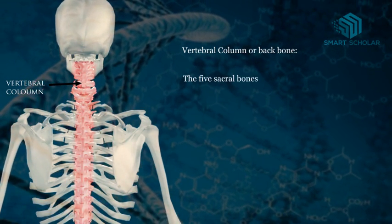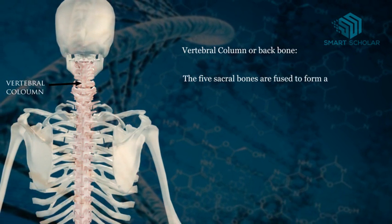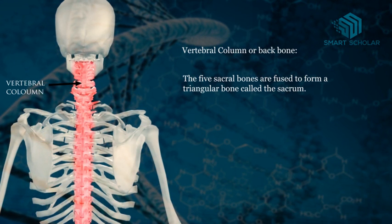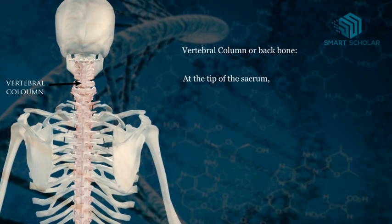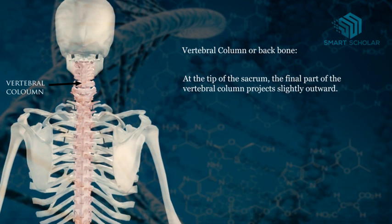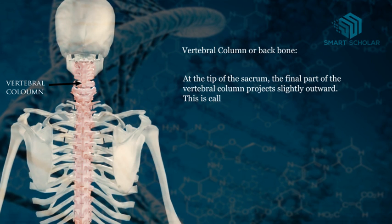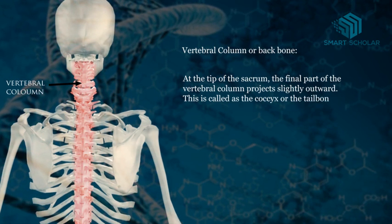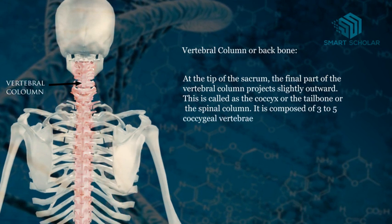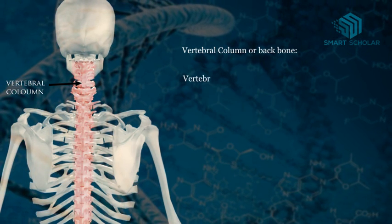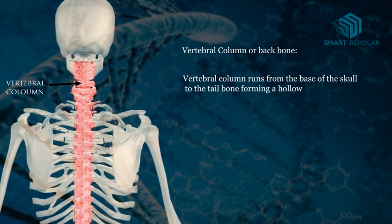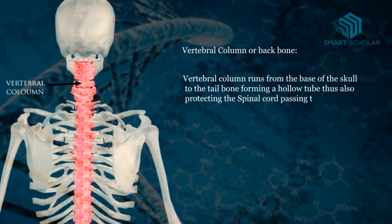The 5 sacral bones are fused to form a triangular bone called the sacrum. At the tip of the sacrum, the final part of the vertebral column projects slightly outward. This is called the coccyx, or the tailbone. It is composed of 3 to 5 coccygeal vertebrae that fuse together. The vertebral column runs from the base of the skull to the tailbone, forming a hollow tube, thus also protecting the spinal cord passing through it.